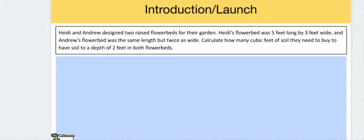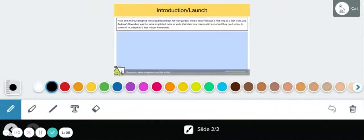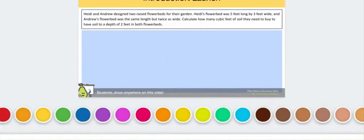Heidi and Andrew designed two raised flower beds for their garden. Heidi's flower bed was five feet long by three feet wide, and Andrew's flower bed was the same length but twice as wide. I'm going to give you a moment to just think about what is the situation that is occurring in this problem.